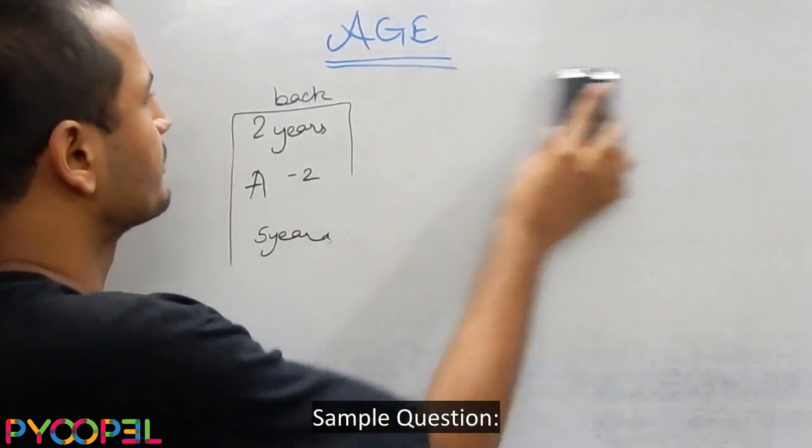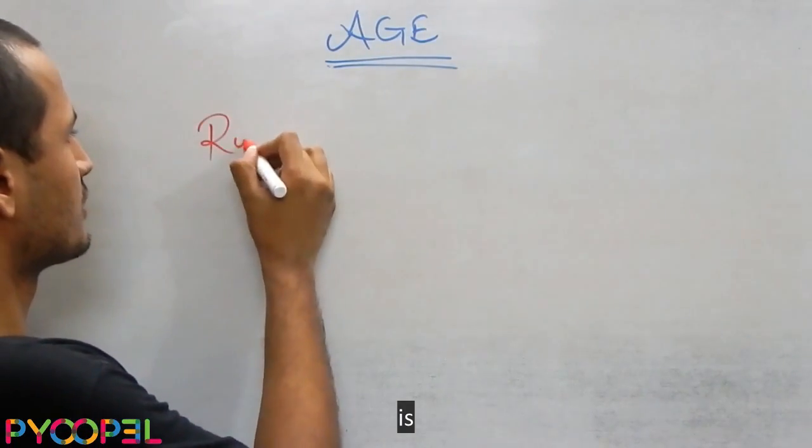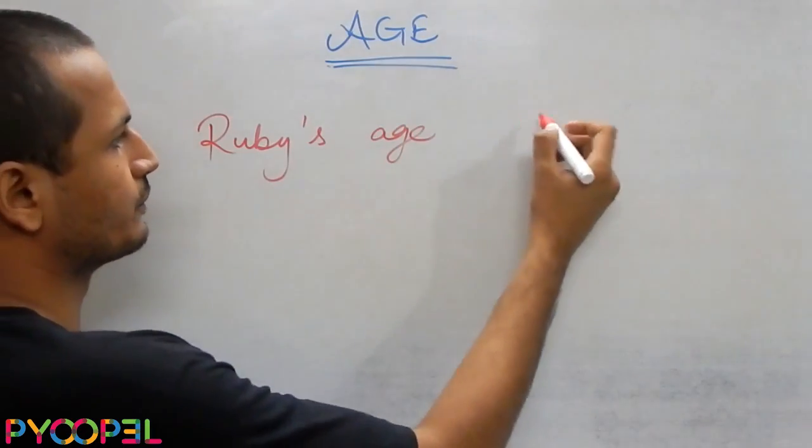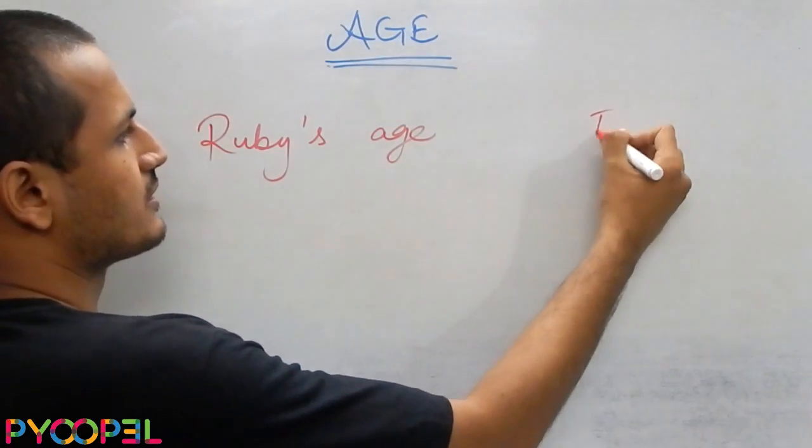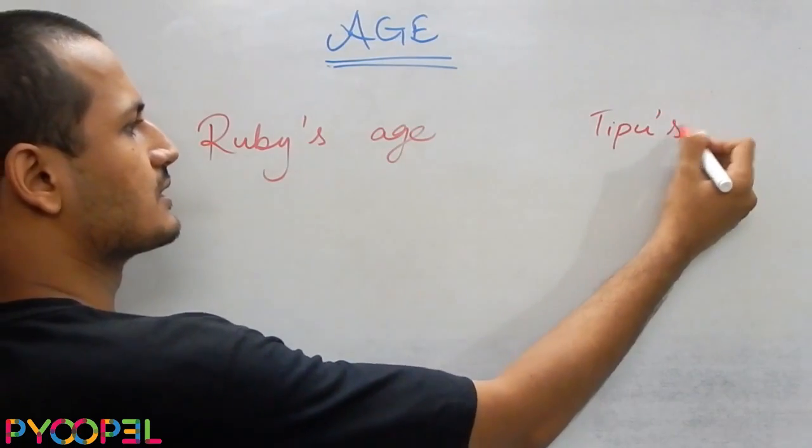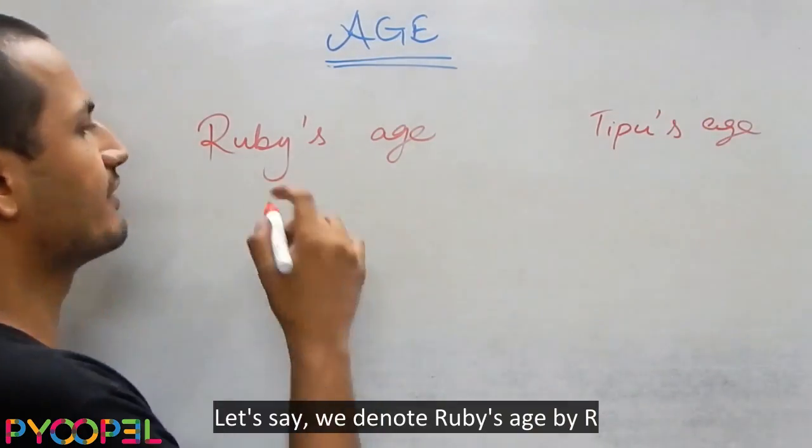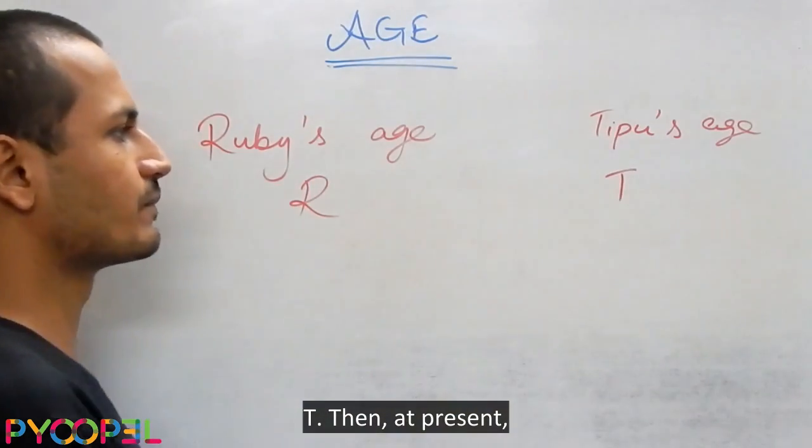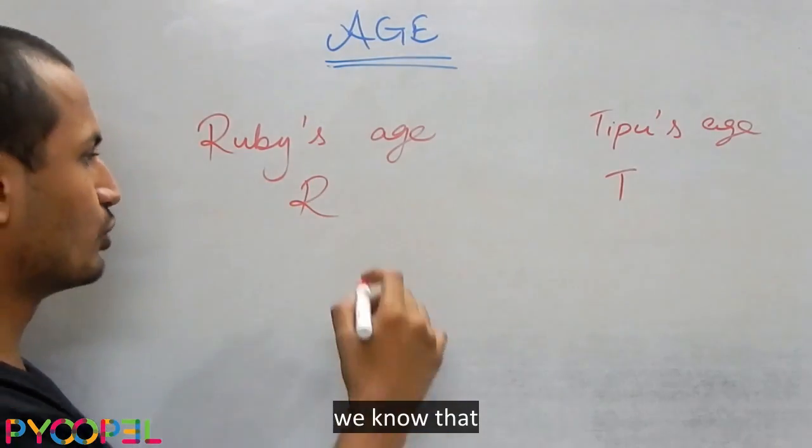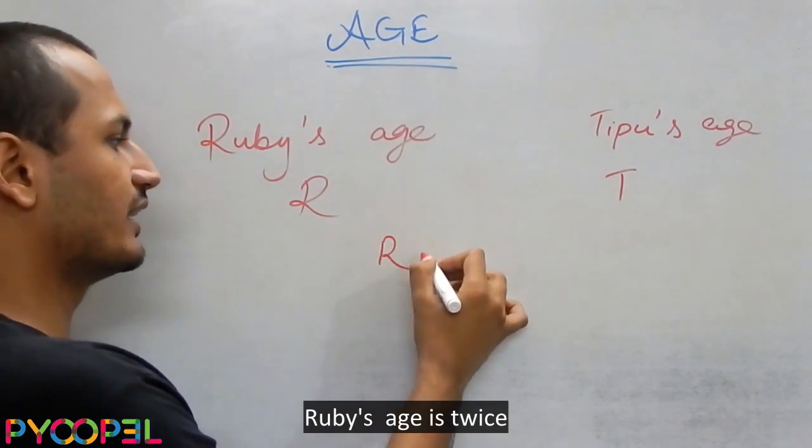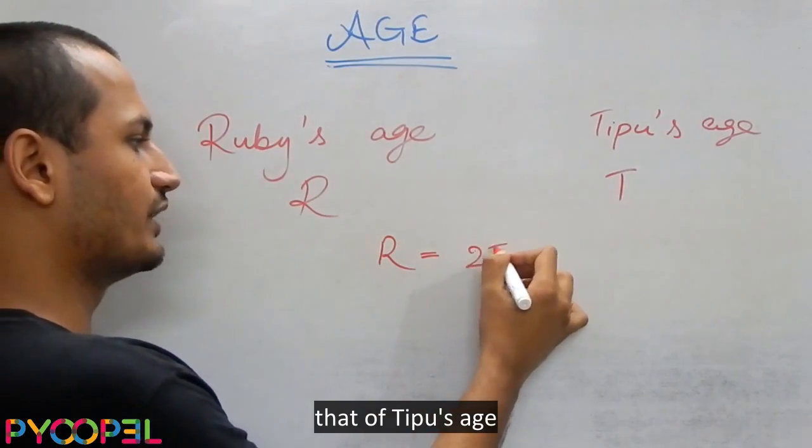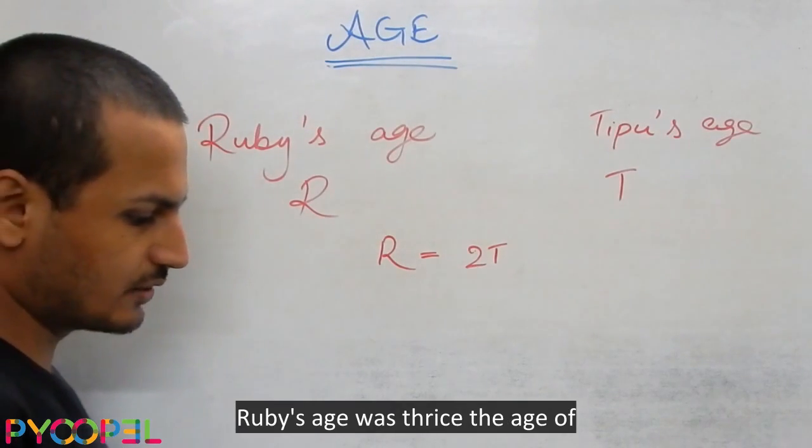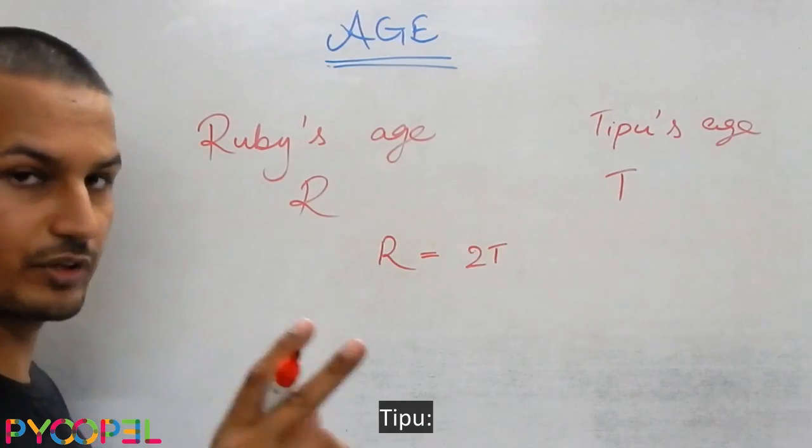A sample equation: Ruby's age is twice that of Tipu. Let's say we denote Ruby's age by R and Tipu's age by T. Then at present we know that Ruby's age is twice that of Tipu's age. Then if five years back Ruby's age was thrice the age of Tipu.